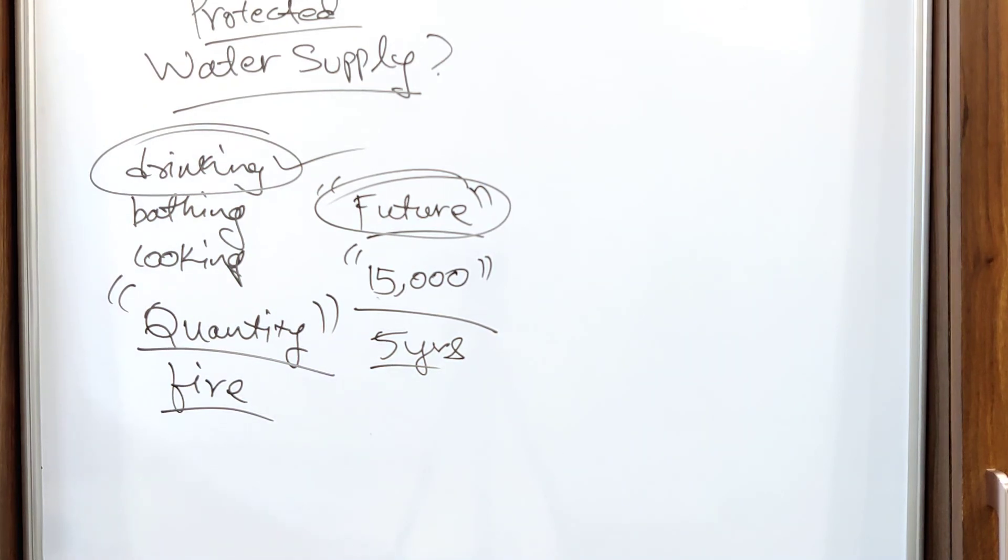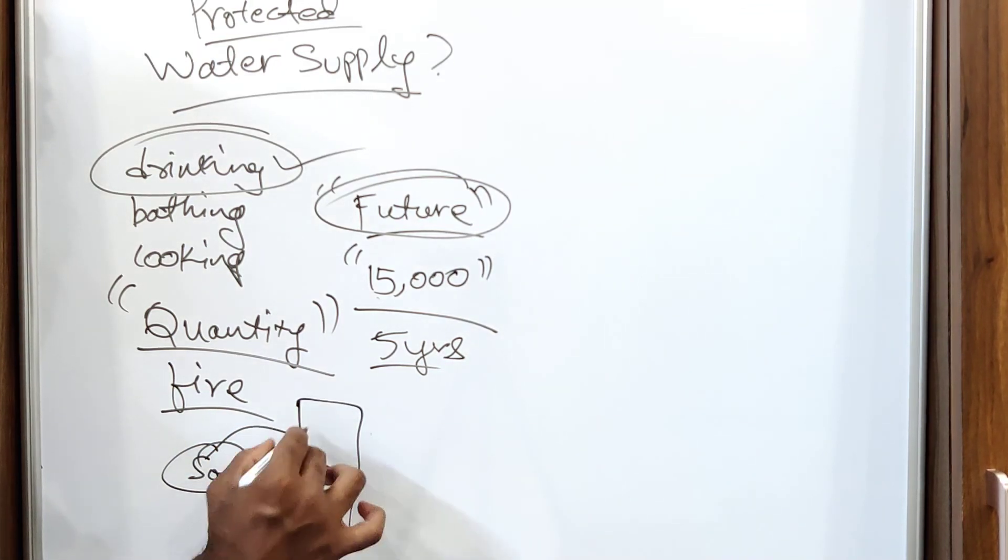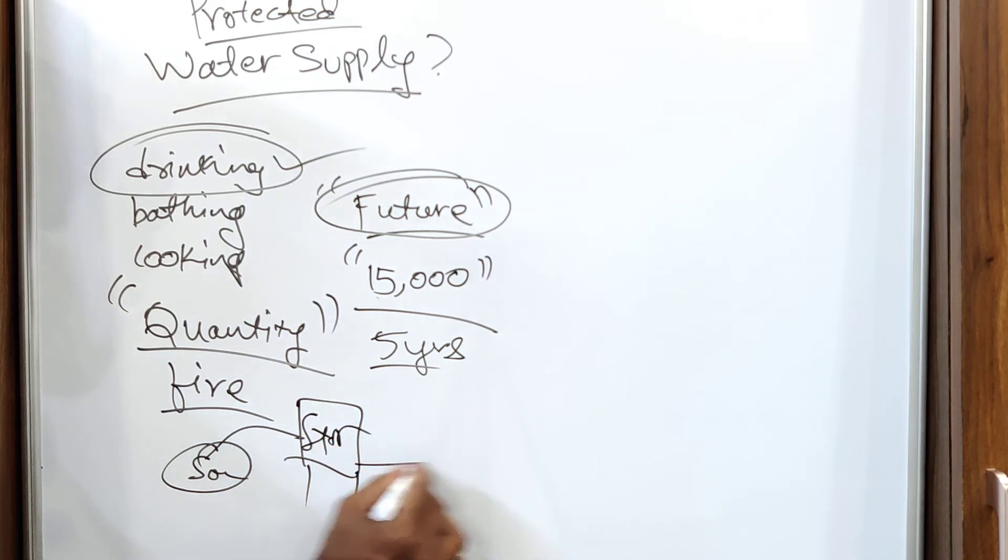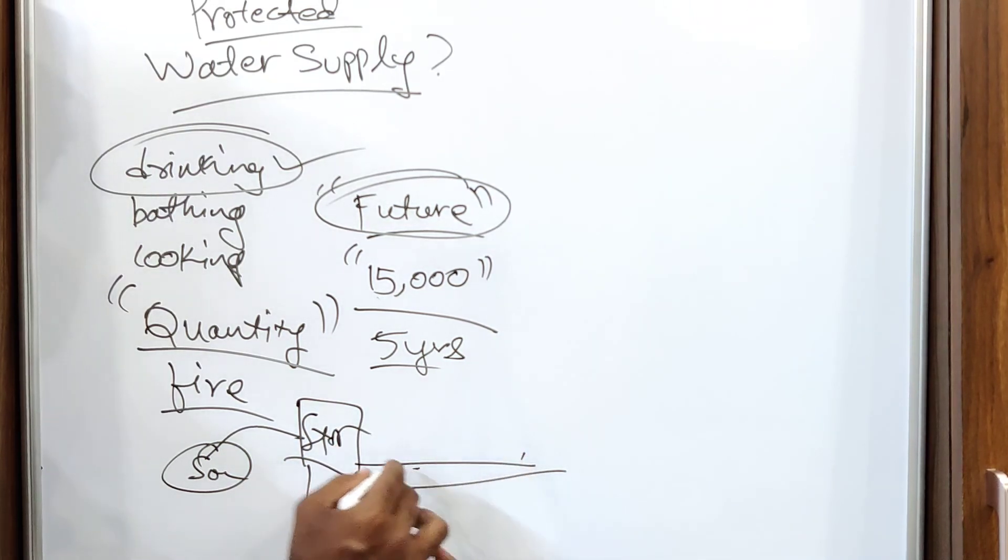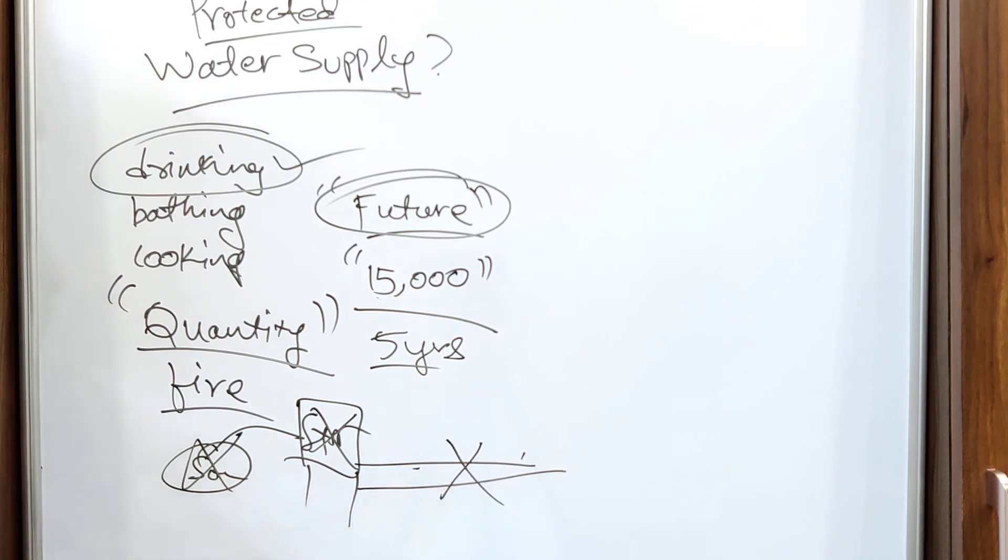the one more objective is to avoid or prevent the pollution in the source and during storage and while conveying. So at any of the point, whether while withdrawing water from the source or while we store the water in storage or during conveyance in any of the area, the pollution of water should be avoided. That is one of the main objectives of the water supply scheme or the community water supply system.